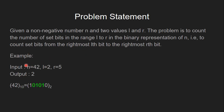Let's see an example. If n equals 42 and the range is l equals 2 to r equals 5, then the number of set bits in the range 2 to 5 is 2. Here, in the binary representation of 42, I have highlighted the bits in the range 2 to 5, and if we count the number of set bits in this range, it is 2, so the output is 2.